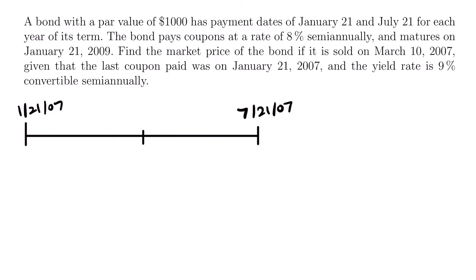The date in between those two periods is the moment in time where we want to calculate the price. We want to find the market price of the bond if it is sold on March 10th, 2007, which is between these two coupon dates. So our date in the middle is March 10th, 2007. The first thing we want to do to calculate this market price is figure out what P sub 0 would be — the price of the bond at the time the last coupon was made, which is January 21st, 2007.